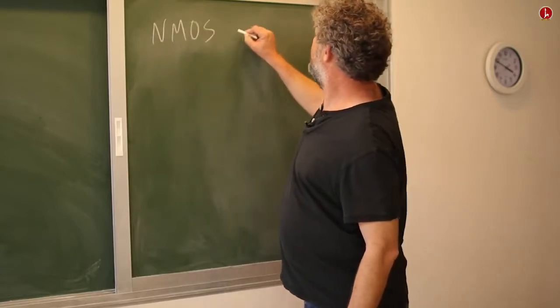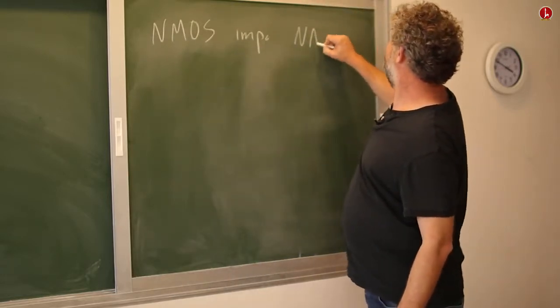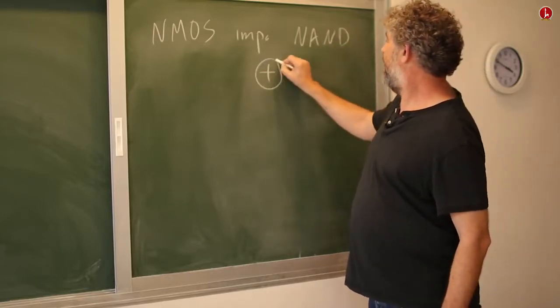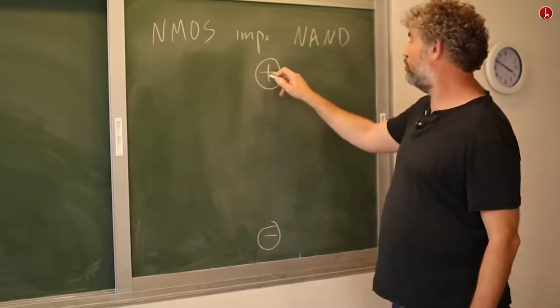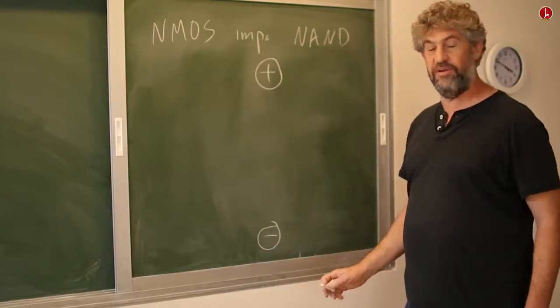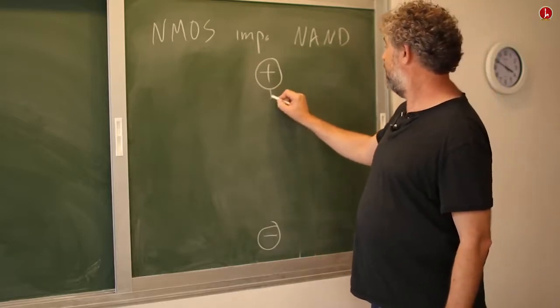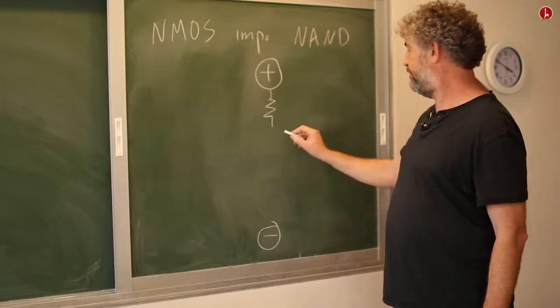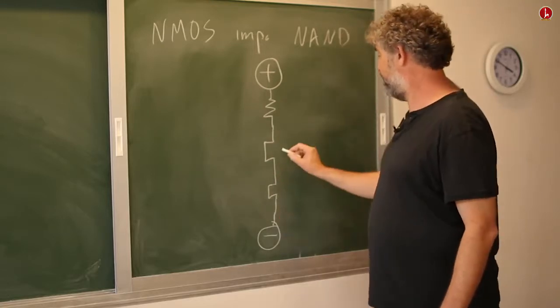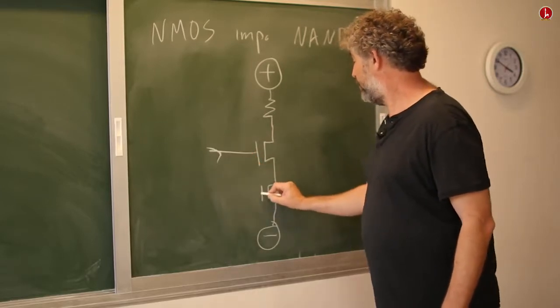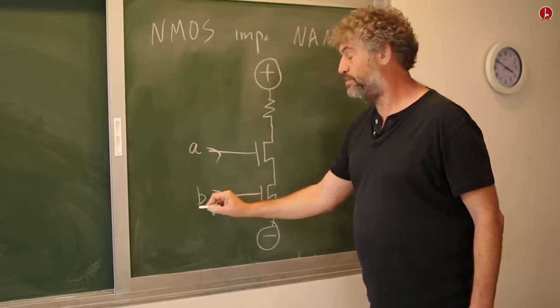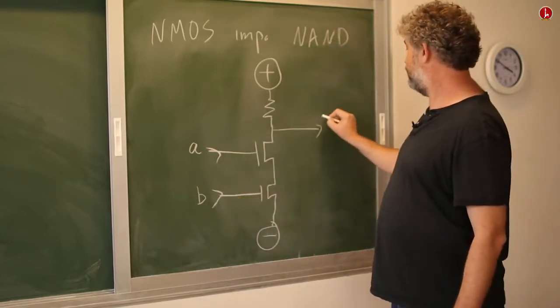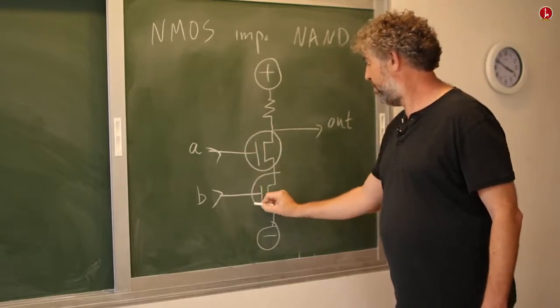There are many different technologies to implement NAND gates and any other gate. Let me show you the simplest example of such an implementation. Here is an NMOS implementation of a NAND gate. We have a plus voltage, which is going to be our logical one, and a minus voltage, which is our logical zero. We connect them with a little resistor, which is a weak connection, and then two NMOS transistors connected in series. This is going to be our A input, and this is going to be our B input. And this is going to be our output.